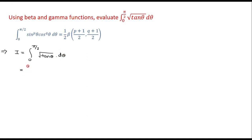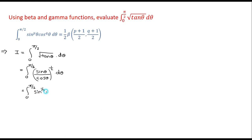Let me write tan theta in terms of sin and cos. The integral from 0 to pi/2 — we can write this as sin theta divided by cos theta raised to the power 1/2, d theta. This will become the integral from 0 to pi/2 of sin raised to 1/2 theta and cos raised to minus 1/2 theta d theta. Comparing with the standard result of sin raised to p theta into cos raised to q theta, we have p equal to 1/2 and q equal to minus 1/2.